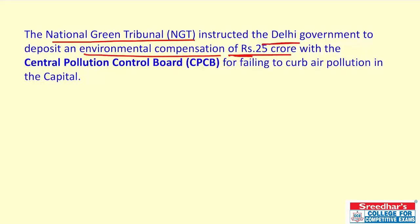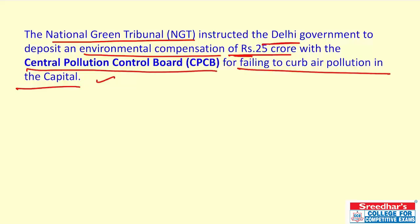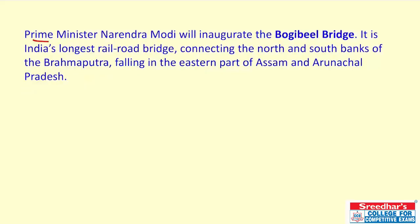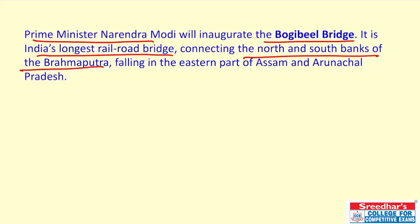The National Green Tribunal has instructed that an environmental compensation of ₹25 crore be levied on the Delhi government for failing to curb air pollution in the capital. This ₹25 crore is to be deposited with the Central Pollution Control Board. Following the fine on West Bengal, NGT has now imposed a fine on the Delhi government as well.